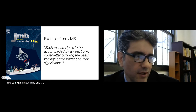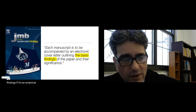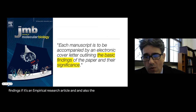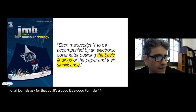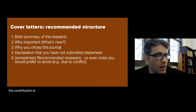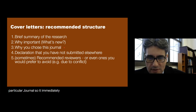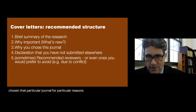The basic ingredients — as exemplified by the Journal of Molecular Biology — are an outline of the basic findings, if it's an empirical research article, and also the significance, why that's important. That's what they ask for specifically. Not all journals ask for that, but it's a good formula for success. Generally speaking, cover letters should have a brief summary of what the research is, why it's important, what the contribution is. And many people pointed out: why you chose this particular journal — so it sends the message to the editor that you've chosen that journal strategically.